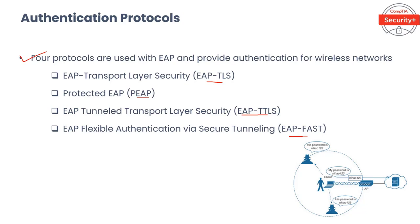EAP-TLS messages are encapsulated into 802.1x packets and are marked as EAP over LAN (EAPOL). After the client sends a connection request to the wireless access point, the authenticator marks all initial communication with the client as unauthorized — only EAPOL messages are accepted while in this mode, and all other types of communication are blocked until credentials are verified with an authentication server.